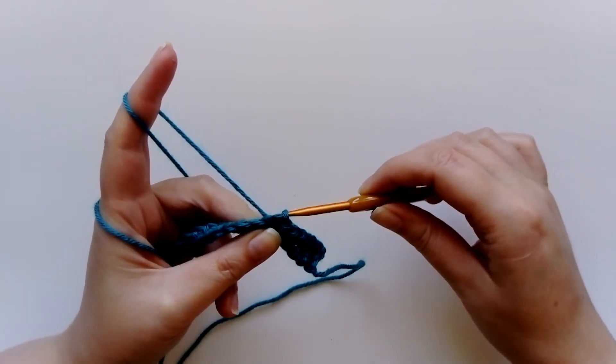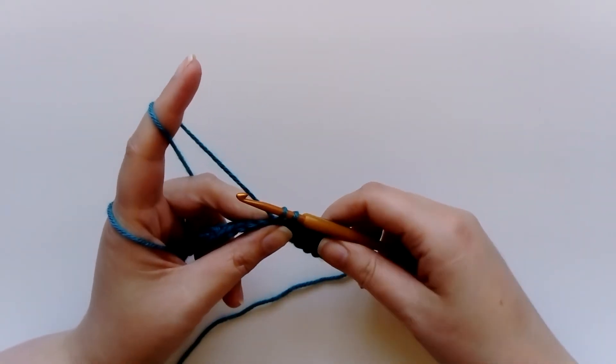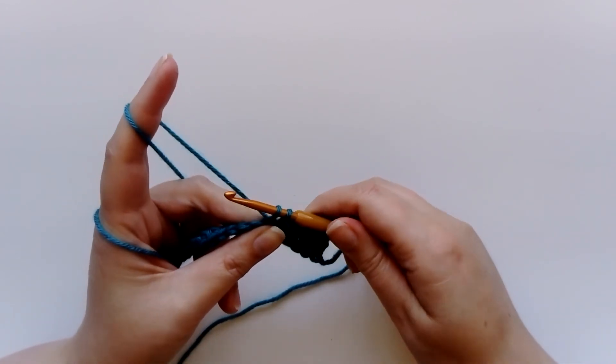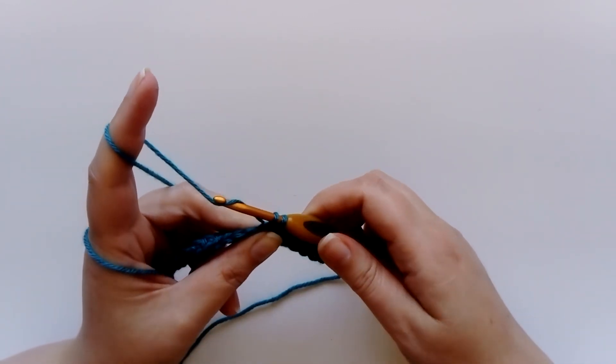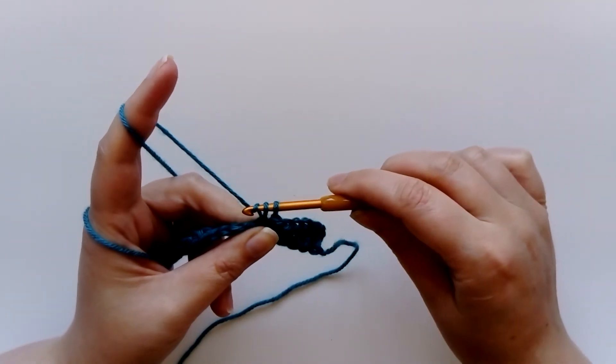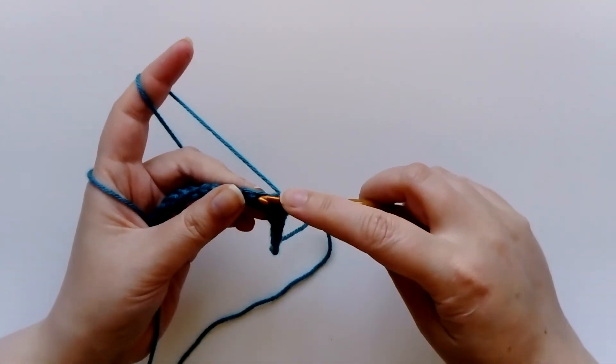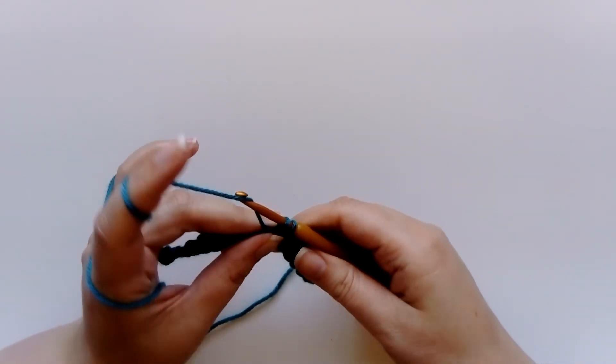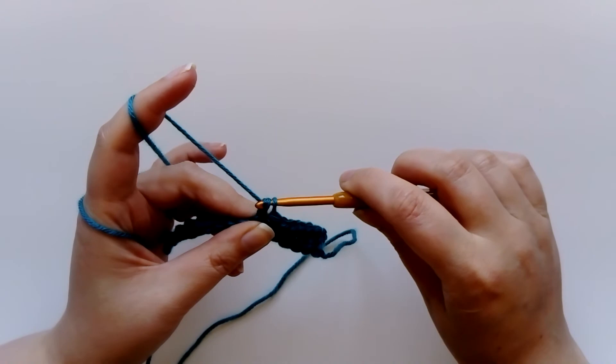But when you're doing a double crochet stitch, if you've got two loops, the next step is to wrap it over and pull it through both of those loops. Insert hook, pull the yarn through, wrap it over, pull it through both loops.